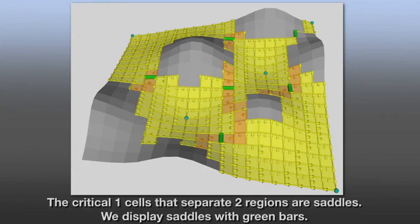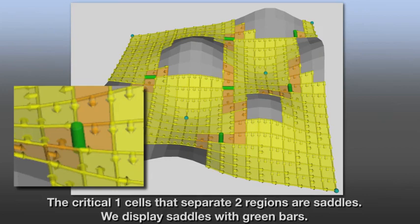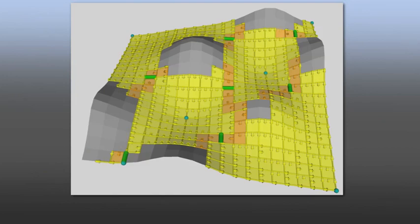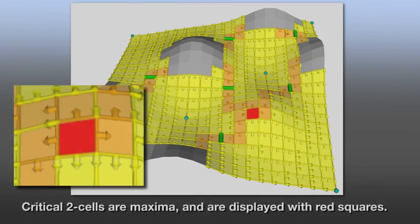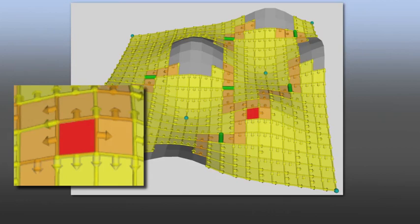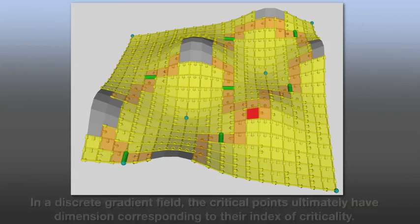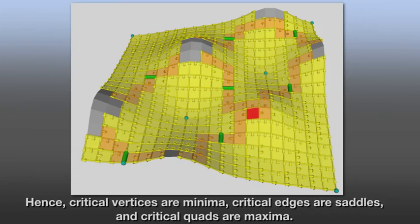The critical number 1 cells that separate the number 2 regions are saddles. We display the saddles with green bars. Critical number 2 cells are maxima, and they are displayed with red squares. In a discrete gradient field, the critical points ultimately have dimension corresponding to their index of criticality. Hence, critical vertices are minima, critical edges are saddles, and critical quads are maxima.